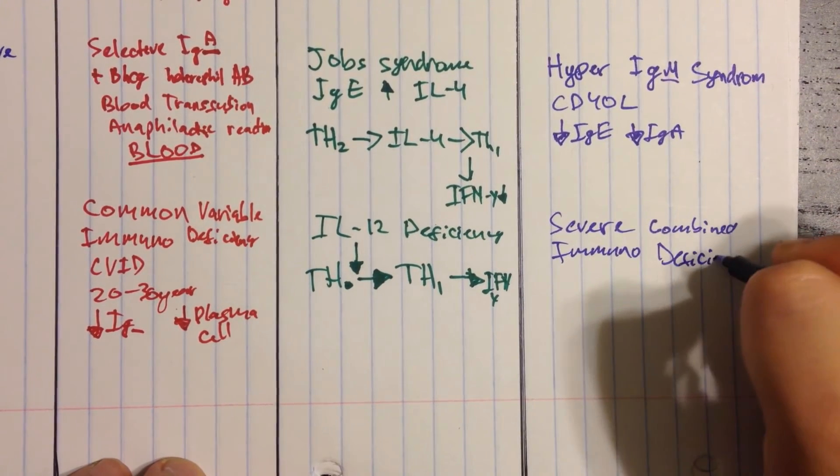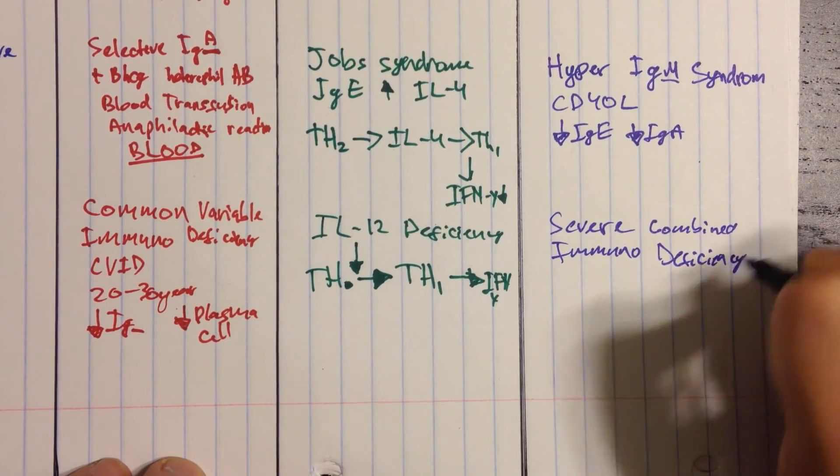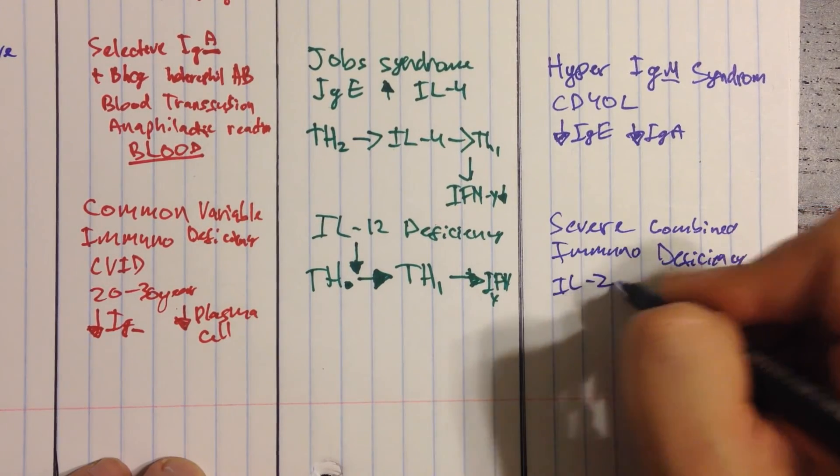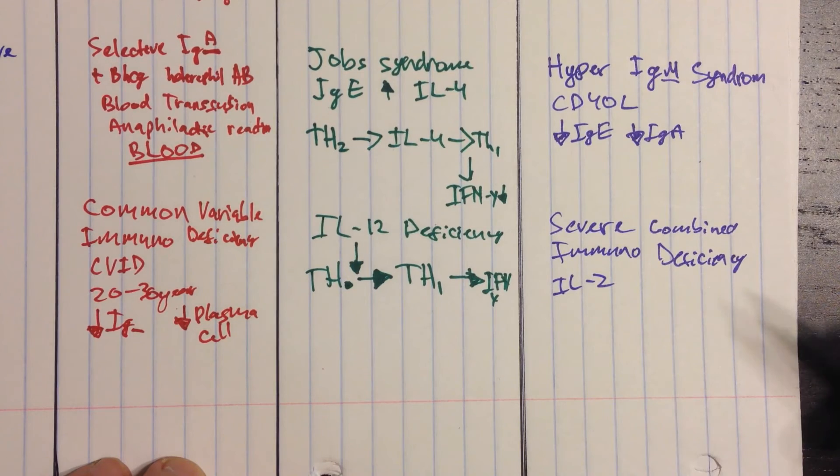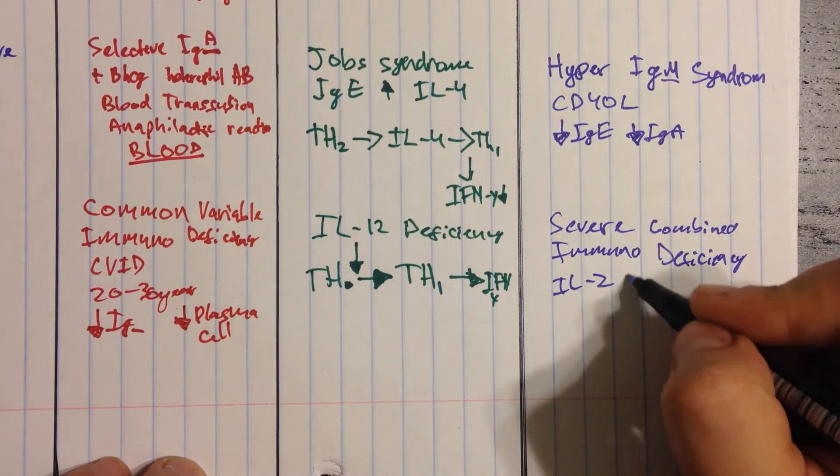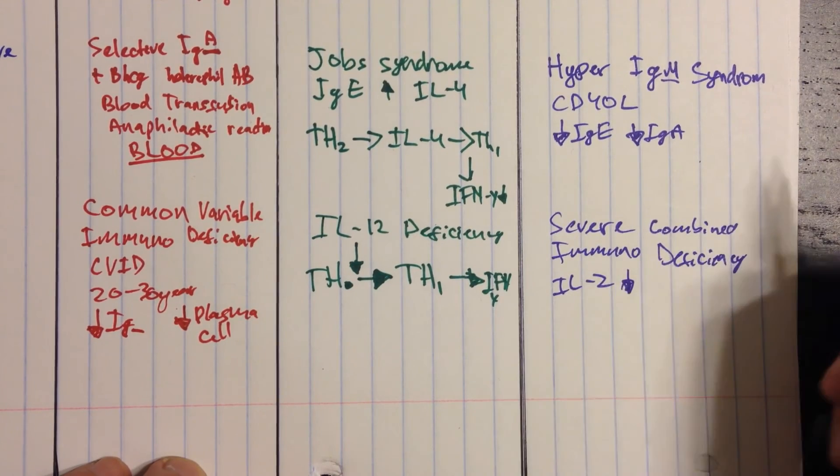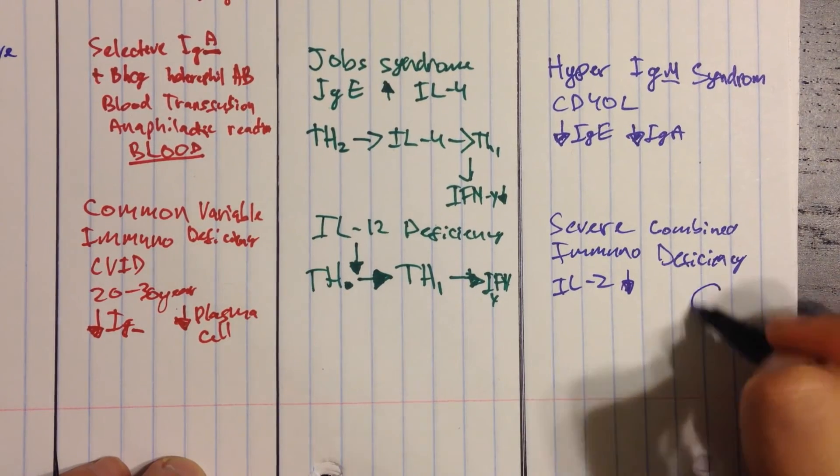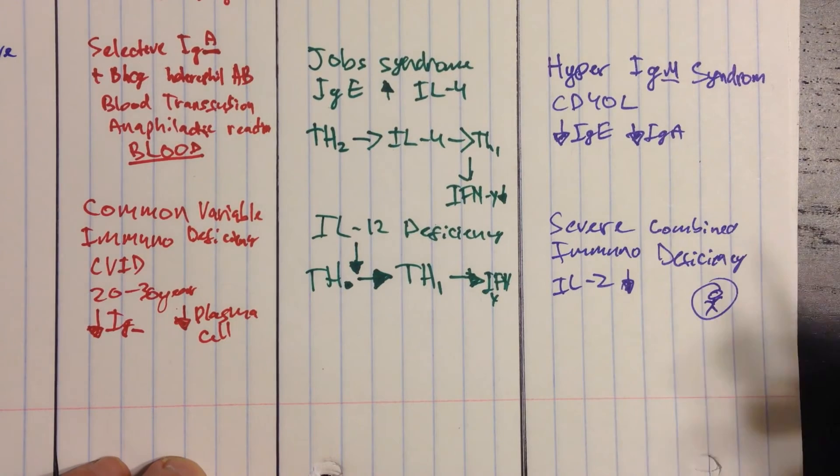And so this disease, what's going on here? What's happening is you have no interleukin-2, which the T cells need to activate themselves. Whenever they release interleukin-2, it hits the interleukin-2 receptors. These guys don't have these interleukin-2 receptors. So the T cells don't activate and they can't defend themselves. This is the bubble boy, the boy who anything he encounters will kill him because his T cells do not work.